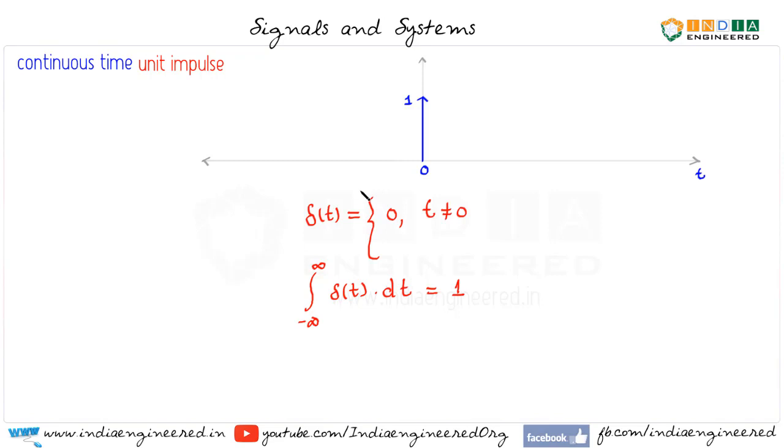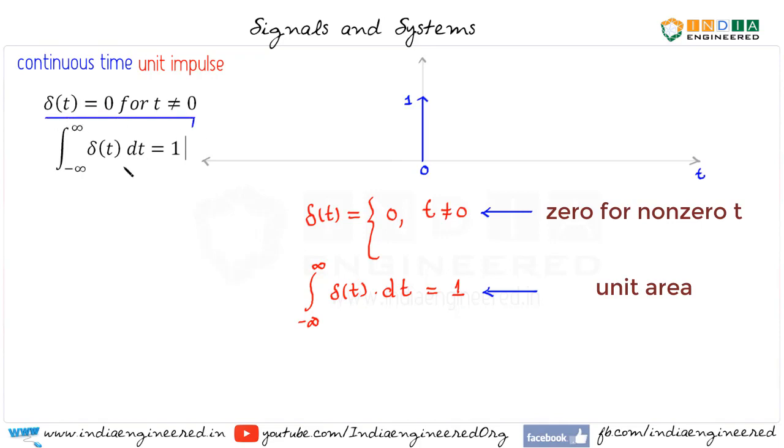Now there are many ways but it should represent two important facts. One, it has to be zero when t is not zero. And the area under this signal should be equal to one. So there are many ways to define this, but these two concepts should always remain. So this is the definition of unit impulse: δ(t) equal to zero when t is not equal to zero, and the area under the impulse function is one.